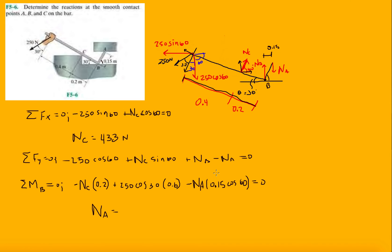So then solving this will give us N_A equals, and let's do this math real quick. So bringing everything to the right side we have 433 times 0.2 minus 250 times cosine 30 times 0.6, times negative 1, and then divided by 0.15 times cosine 60. And that gives me 577.4 newton force for N_A.